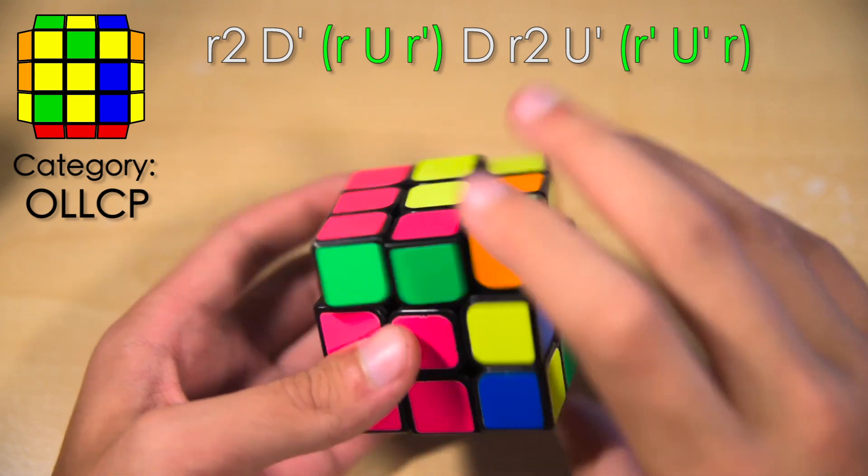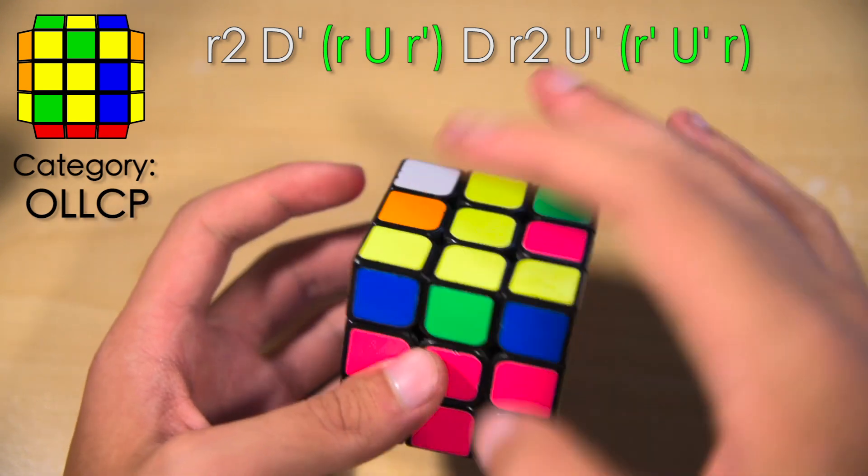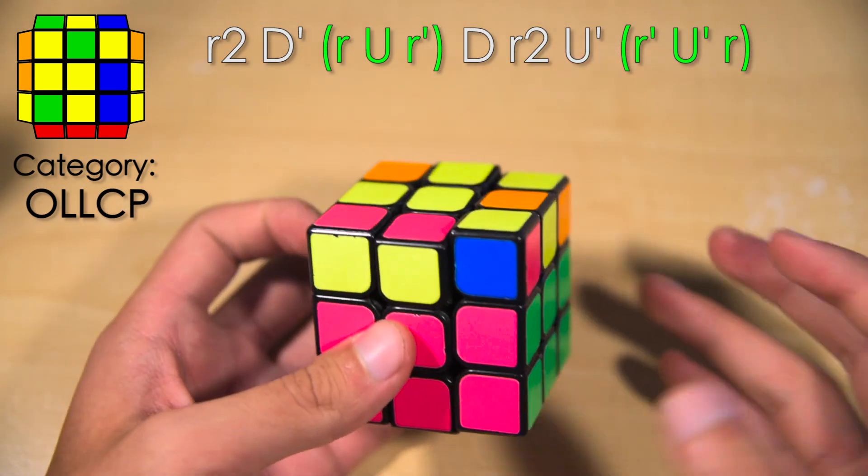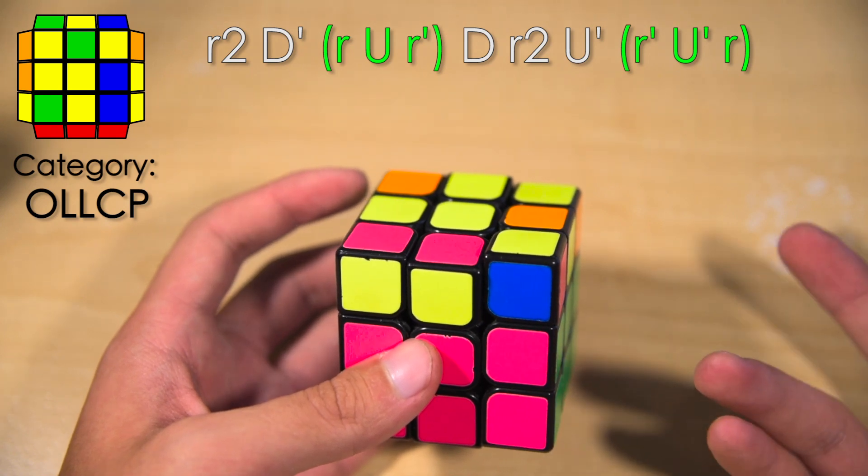Most people, what they do for this OLL is sexy move, RUR prime, and then solve the pair. And that's an alright OLL. It's definitely not bad, especially if you're doing OLL CP.